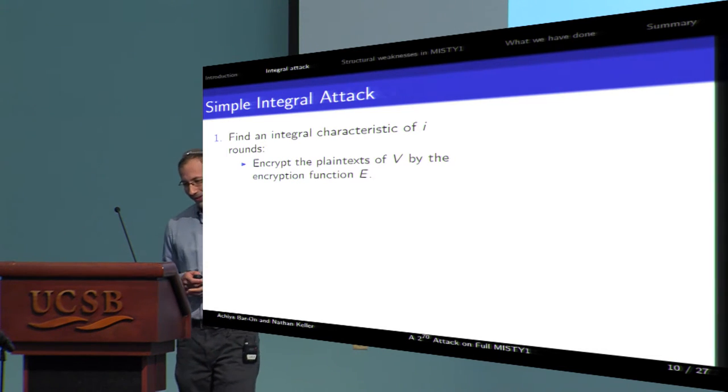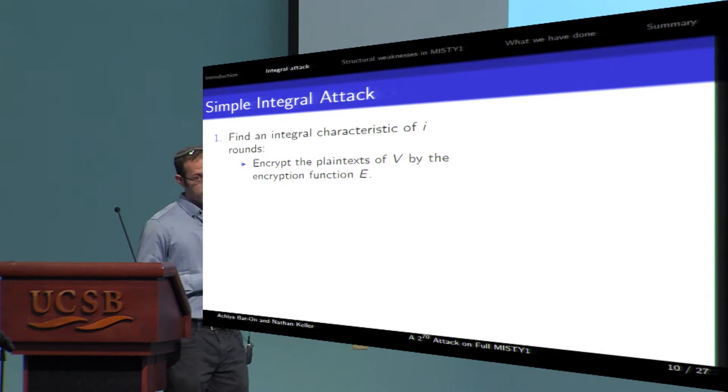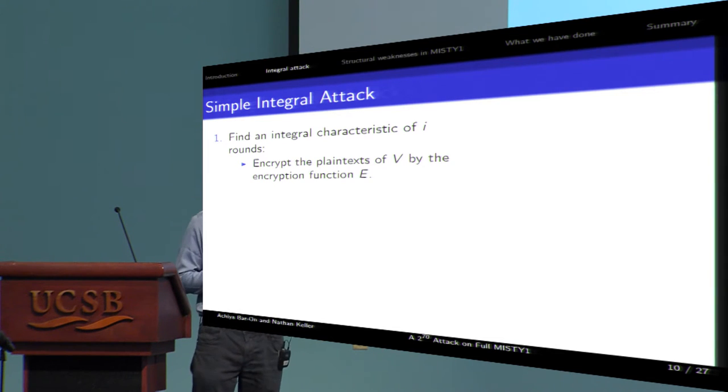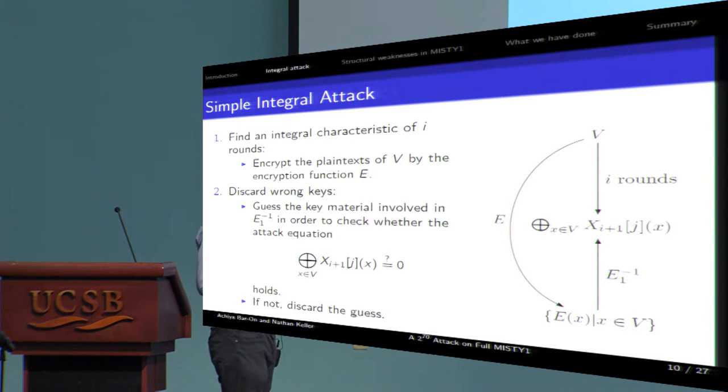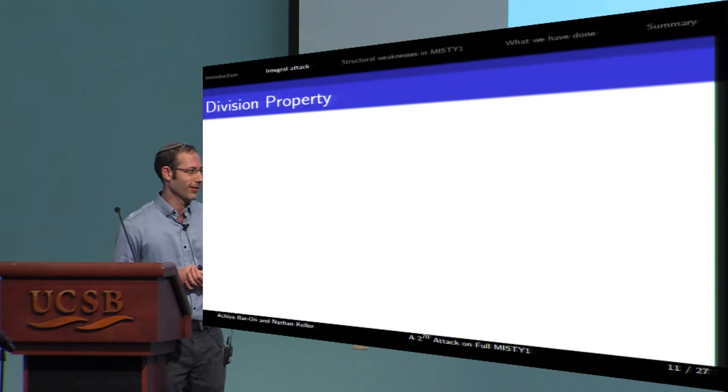What do we do with an integral characteristic? So assume you found an integral characteristic, start with a set of plaintext V, which the corresponding intermediate values sum to zero after i rounds. You encrypt the relevant plaintexts, and then you guess some key bits so you can check whether the attack equation holds. You check if the attack equation holds, and if it's not, you can discard this key guess. But how do you find an integral characteristic? This is the question.